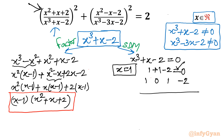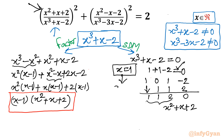Performing synthetic division with root x = 1: leading coefficient 1, then 1×1=1, 0+1=1, 1×1=1, 1+1=2, 1×2=2, -2+2=0. The resulting coefficients give the quadratic x² + x + 2. So x³ + x - 2 = (x - 1)(x² + x + 2). The domain exemption from this denominator is x ≠ 1.